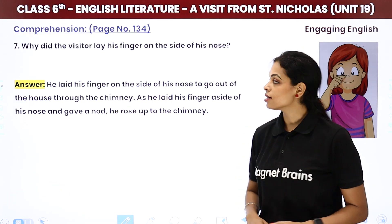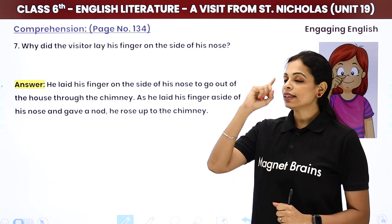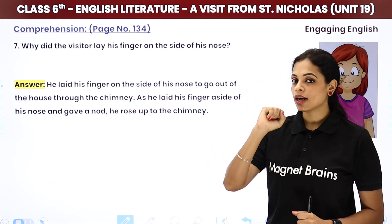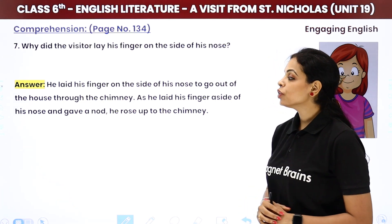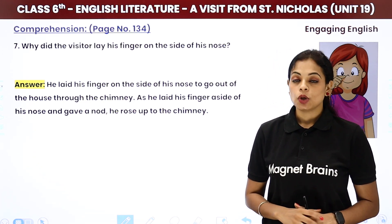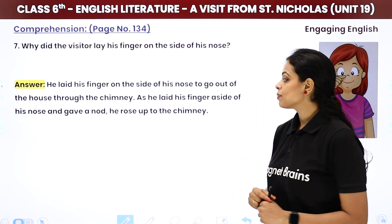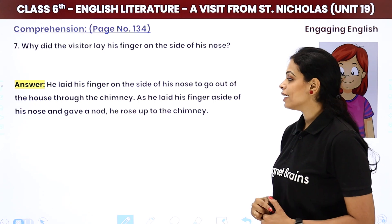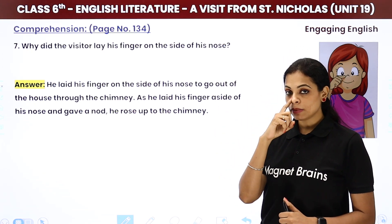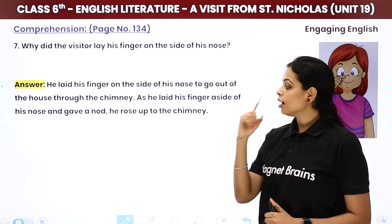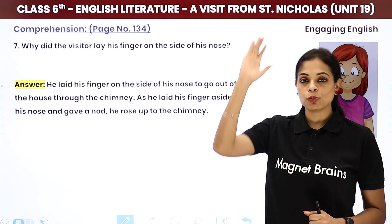Why did the visitor lay his finger on the side of his nose? He laid his finger on the side of his nose to go out of the house through the chimney. As he laid his finger aside his nose and gave a nod, he magically rose up through the chimney.